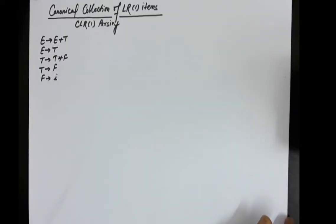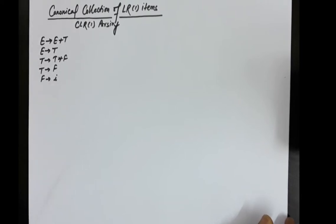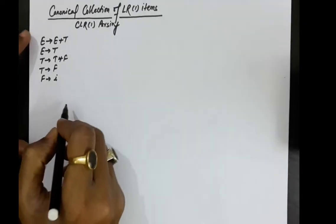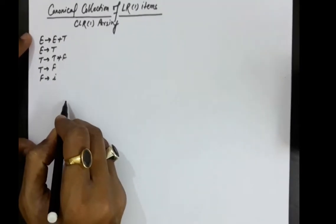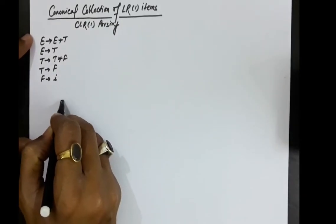In this lecture, we will take more examples of canonical LR parsing and compute the canonical collection of LR1 items for this grammar: E produces E plus T, E produces T, T produces T star F, T produces F, and F produces i. Let us first write the augmented grammar for this.